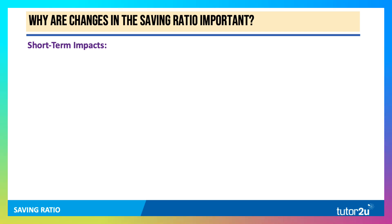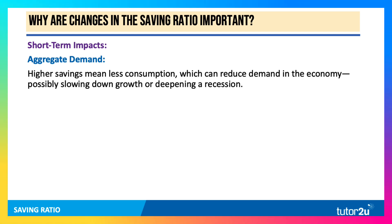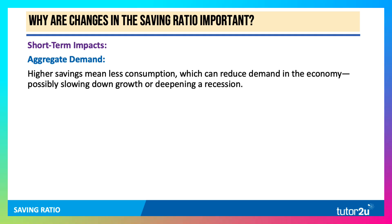Why are changes to the savings ratio important? In the short term, a change in the savings ratio has an effect on aggregate demand. If people are saving more out of income, that implies less consumption, which can lower aggregate demand, potentially slowing down growth or deepening a recession.